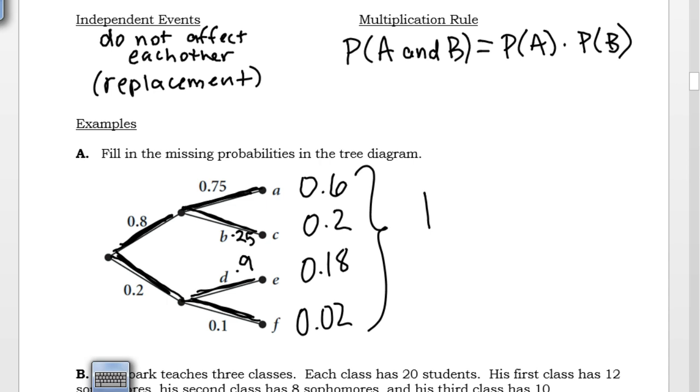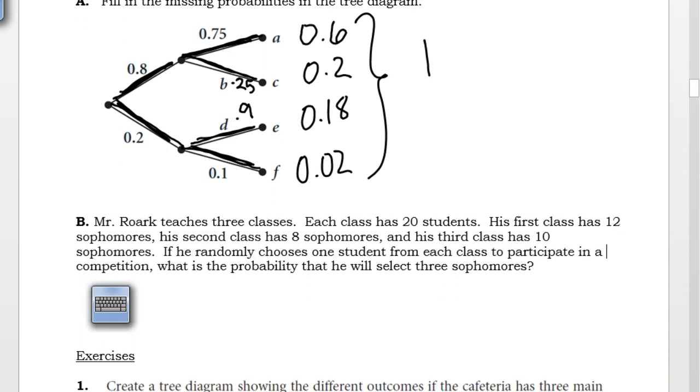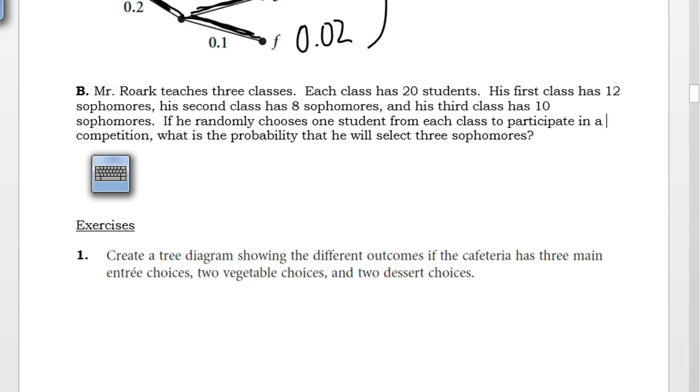I'm going to scroll down for Example B. Mr. Rourke teaches three classes. Each class has 20 students. His first class has 12 sophomores, his second class has 8 sophomores, and his third class has 10 sophomores.